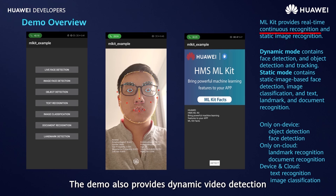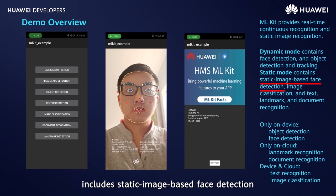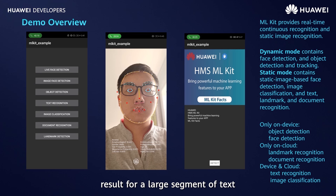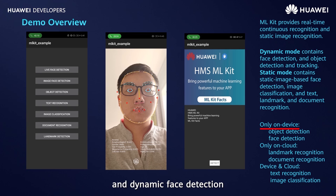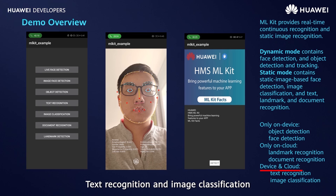The demo provides dynamic video detection and static image detection modes. Dynamic video detection includes face detection and object detection and tracking. Static image detection includes static image-based face detection, image classification, text recognition, landmark recognition, and document recognition. Object detection and face detection are supported only on devices. Document recognition and landmark recognition are supported only on the cloud. Text recognition and image classification can be performed on devices as well as on the cloud.